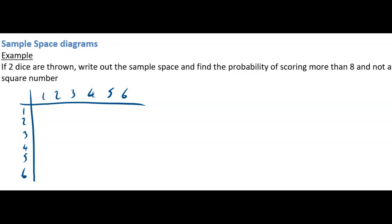The combined score would be 2, 3, 4, 5, 6, 7, 3, 4, 5, 6, 7, 8, then 4, 5, 6, 7, 8, 9, and then 5, 6, 7, 8, 9, 10, and so on. So you can see I've filled in the rest of it.